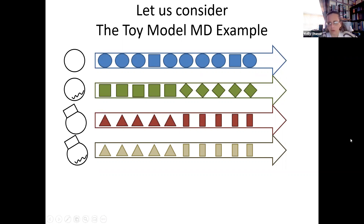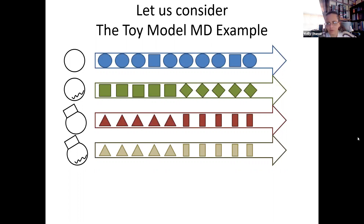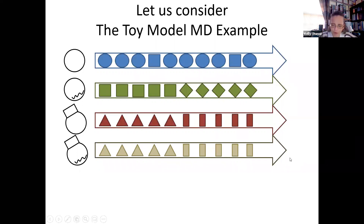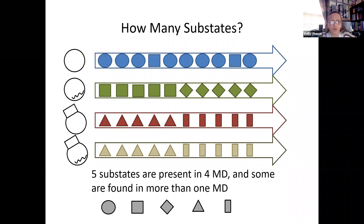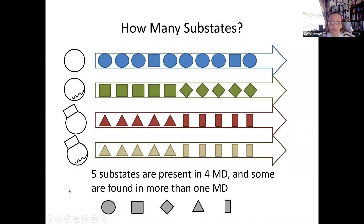The first thing we ask is how many substates we have. Ignoring colors and just counting shapes, we realize there are five substates present across the four molecular dynamics simulations: circle, square, diamond, triangle, and rectangle. We then group substates into bins. Circles only came from the plain protein; squares came from both the plain protein and the AP construct; diamonds, triangles, and rectangles are collected similarly. Colors tell us which simulation each snapshot came from.